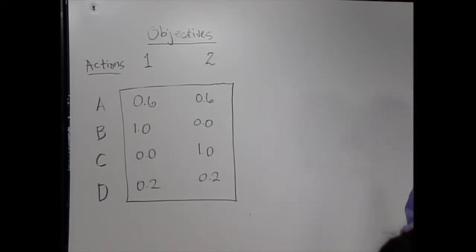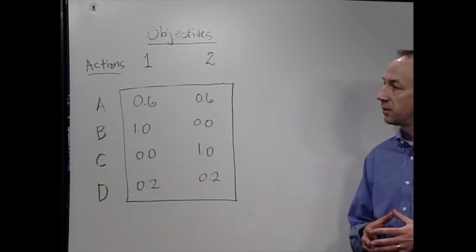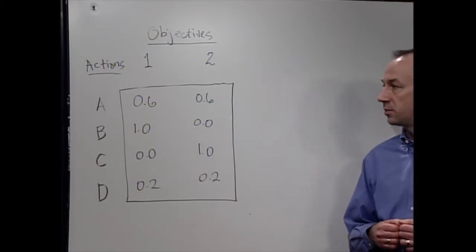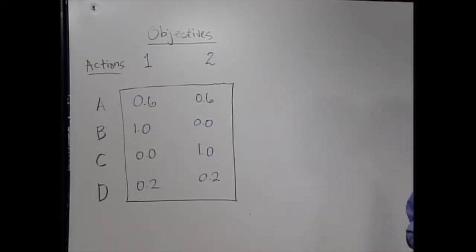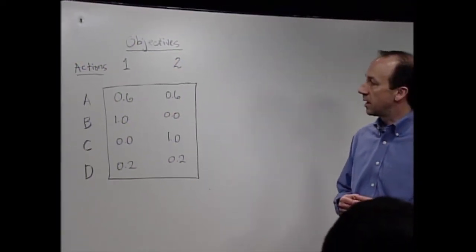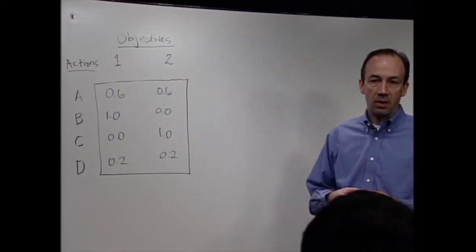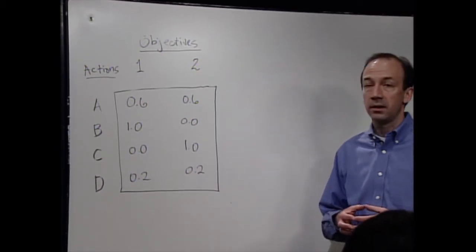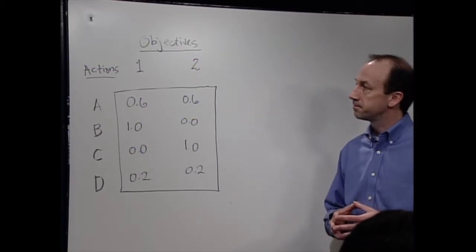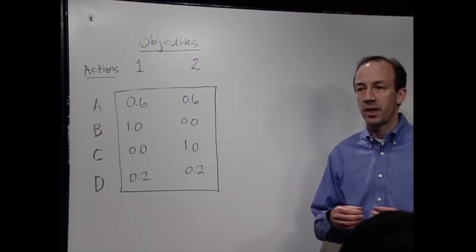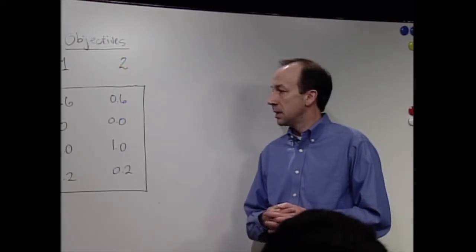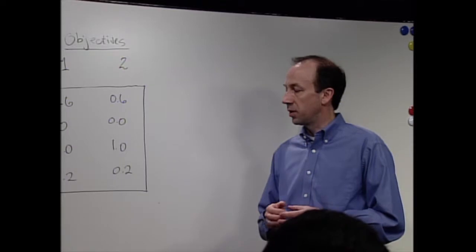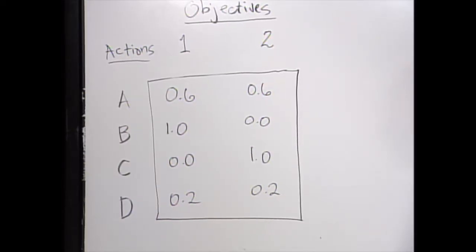Let's imagine we've got two objectives - objective one and objective two. You could think of one of them as a conservation objective and another as a development objective. And let's say we've got four actions that are possible: A, B, C, or D. We've worked through the consequence table, made predictions about these different actions in terms of these different objectives, and normalized them to a zero-one scale.